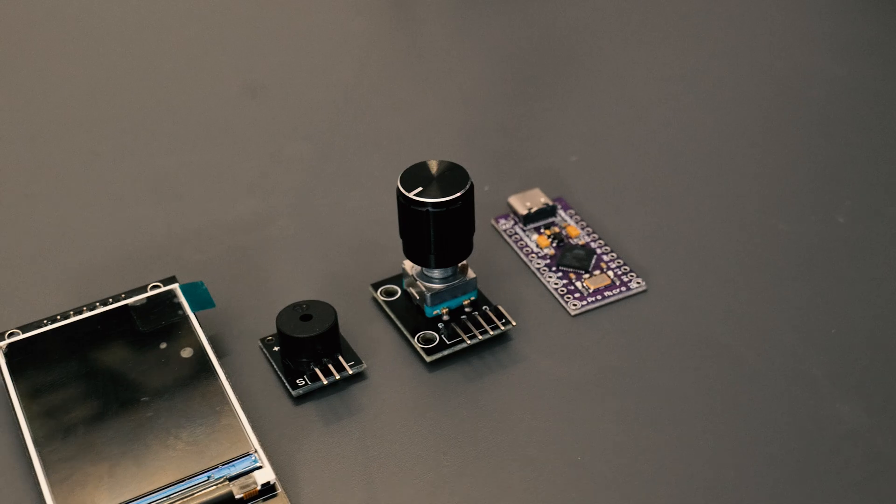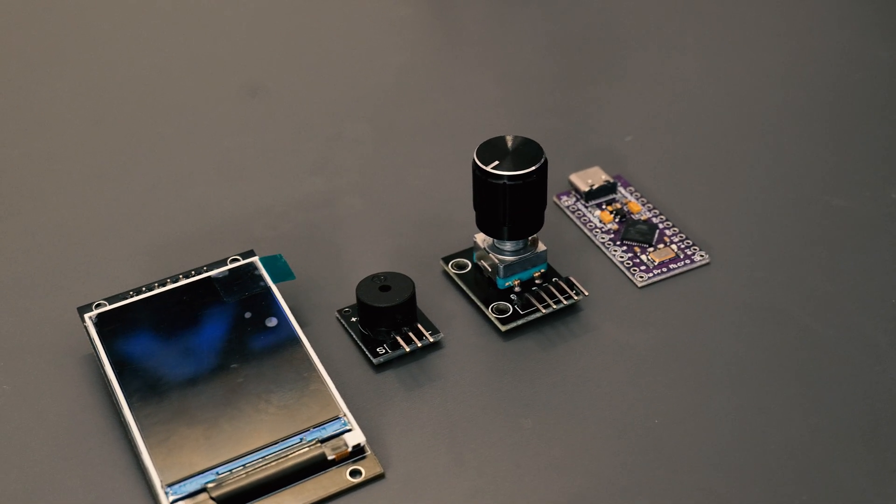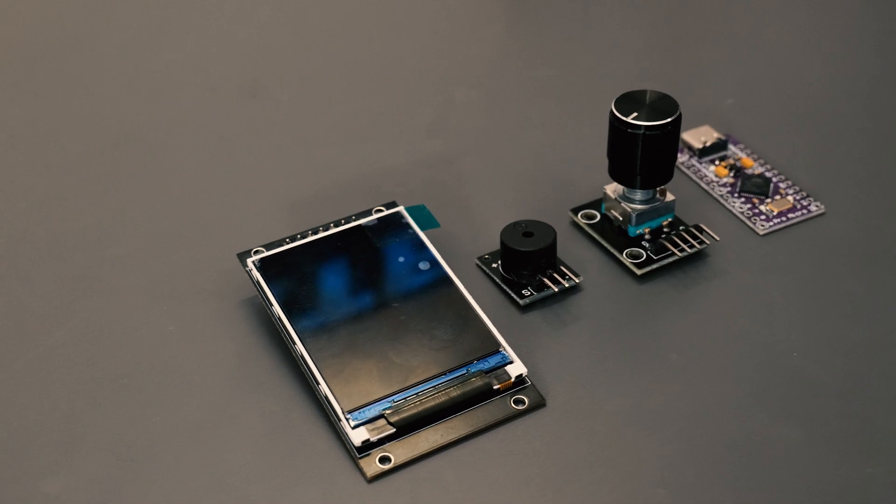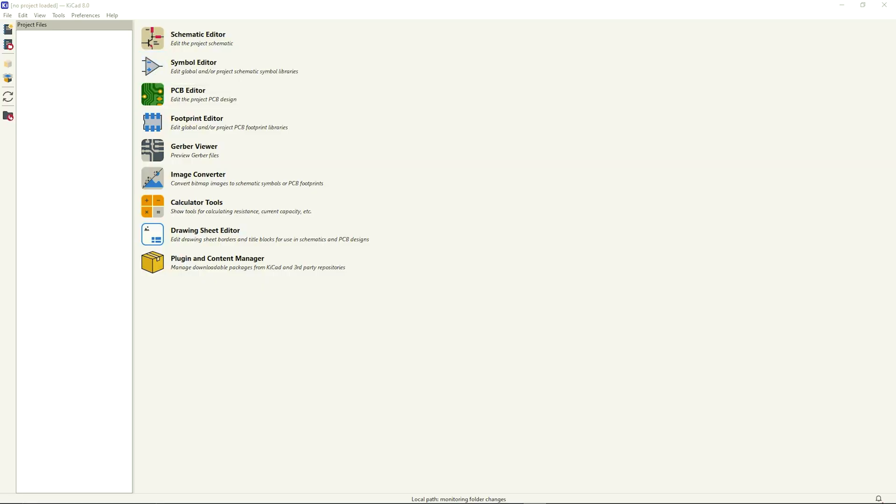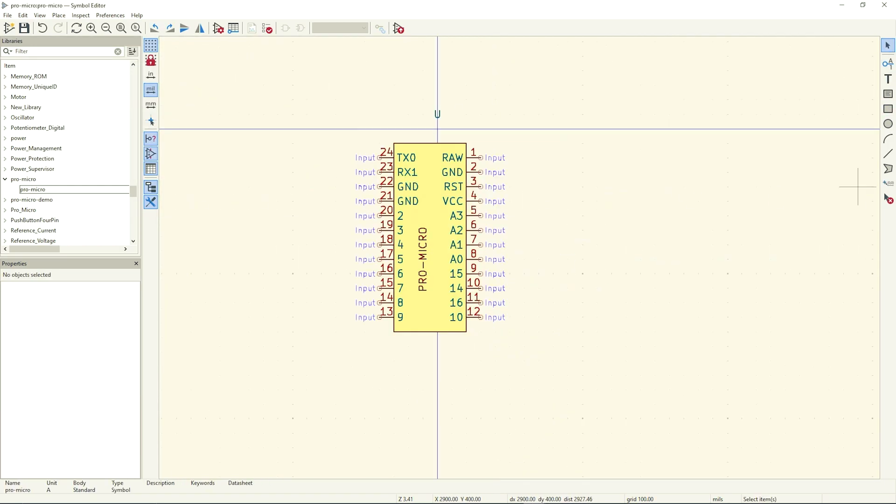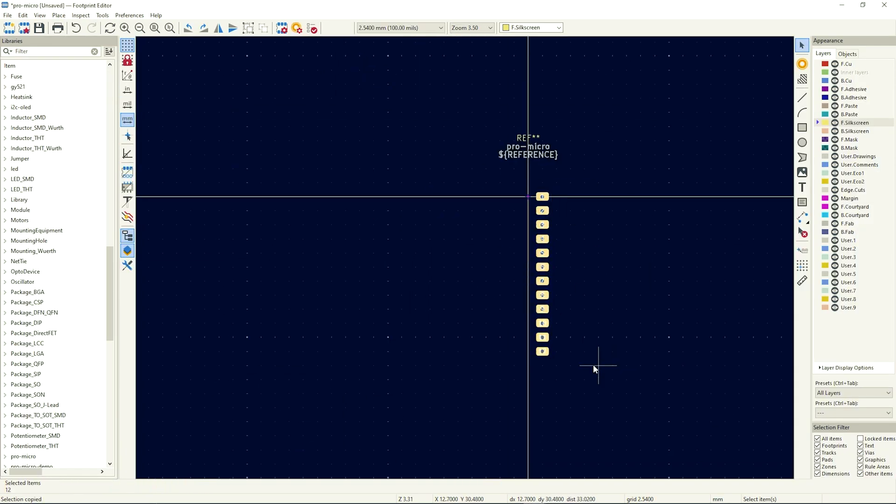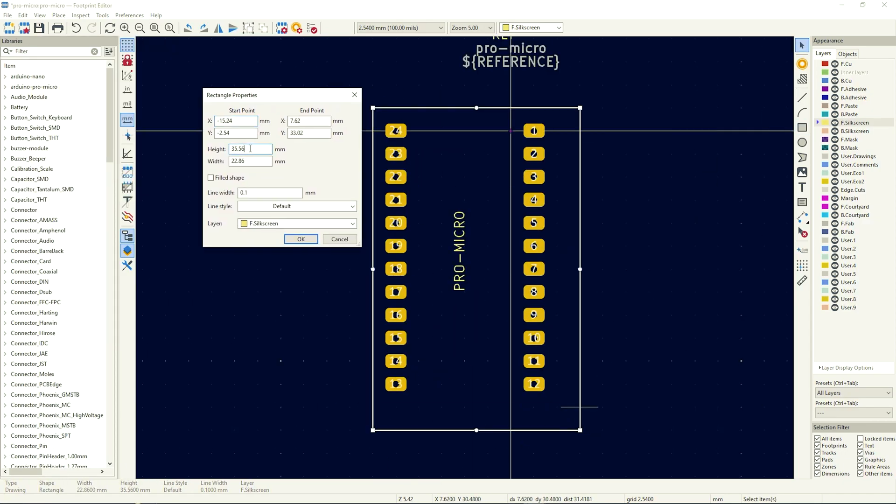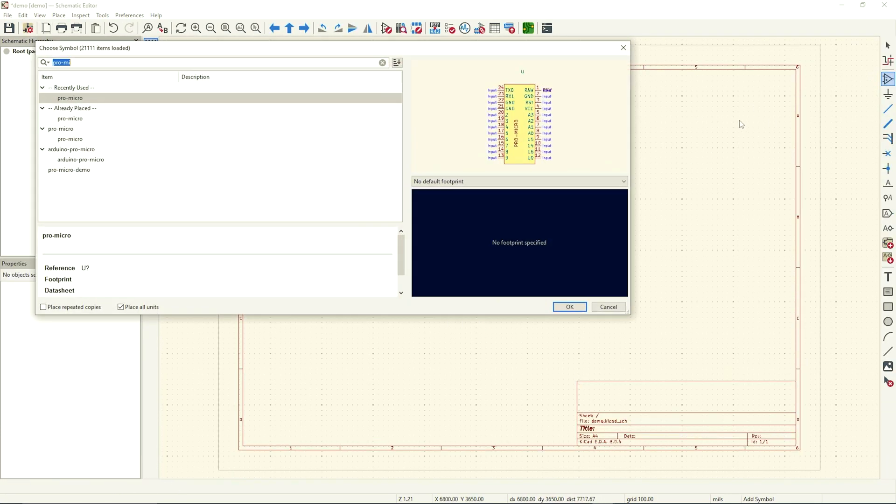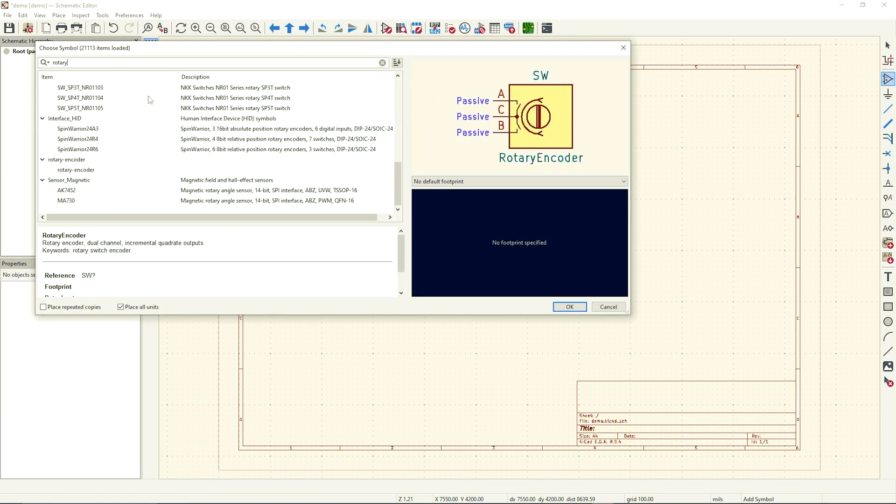There were four main components that made up this circuit: the Pro Micro board, the rotary encoder, the buzzer module, and the OLED screen. In KiCad I made symbols and footprints for each of the components using the symbol editor and the footprint editor. I imported all the symbols into the schematic editor and made the connections as per the circuit plan.